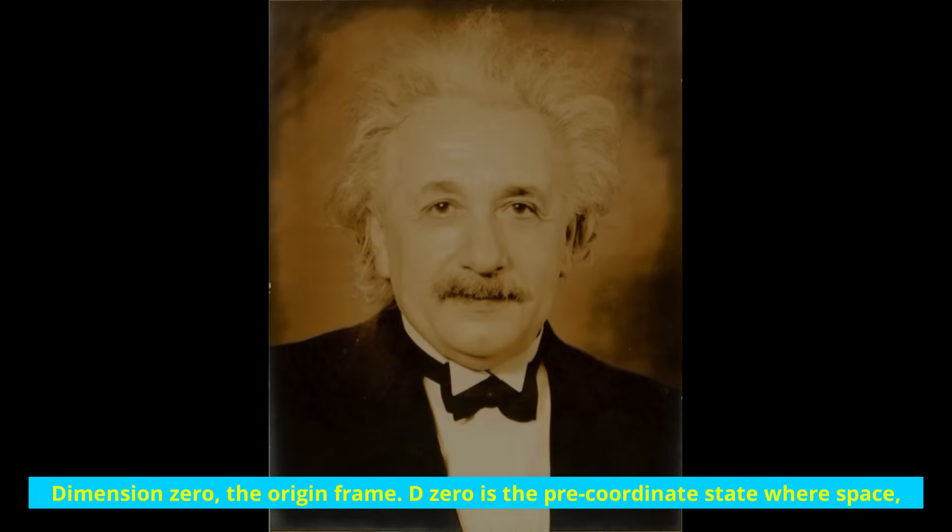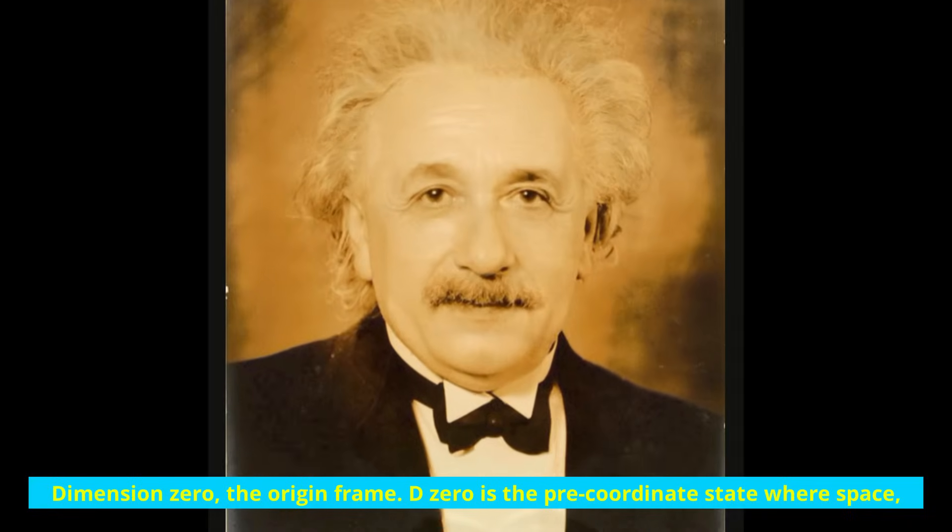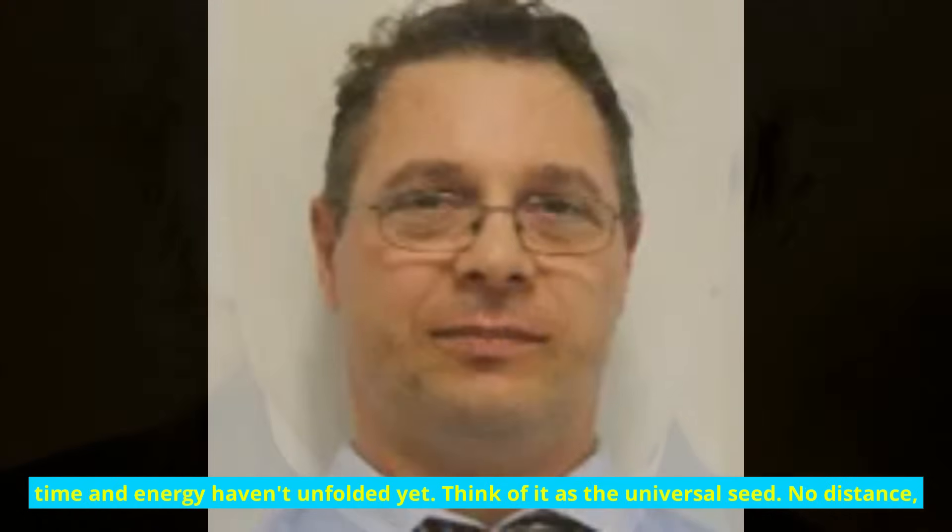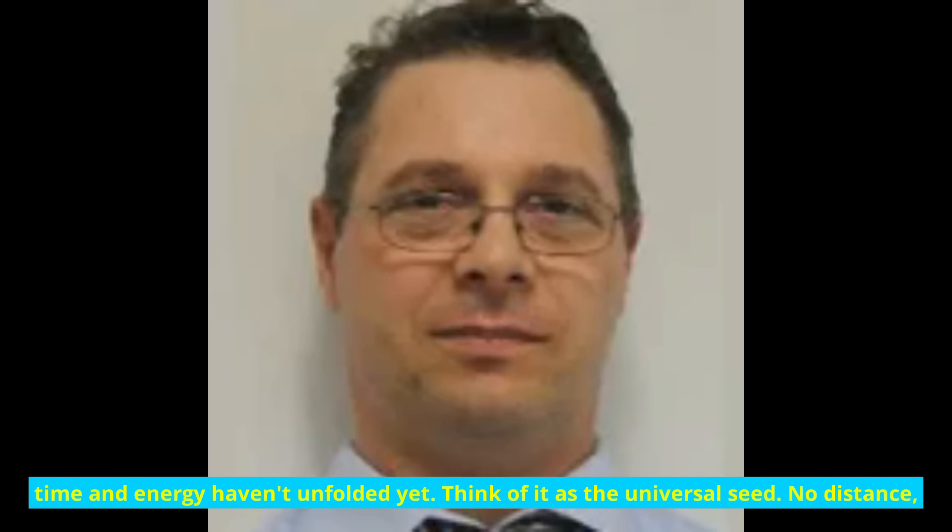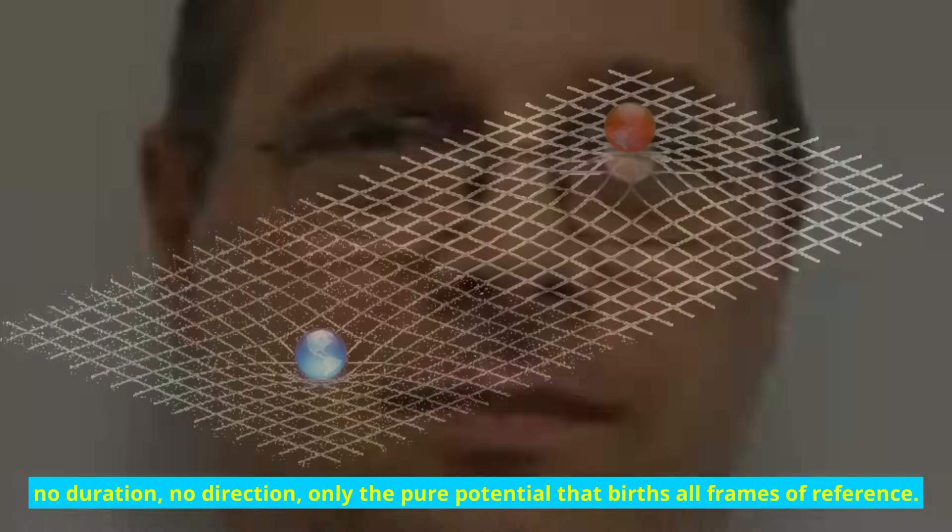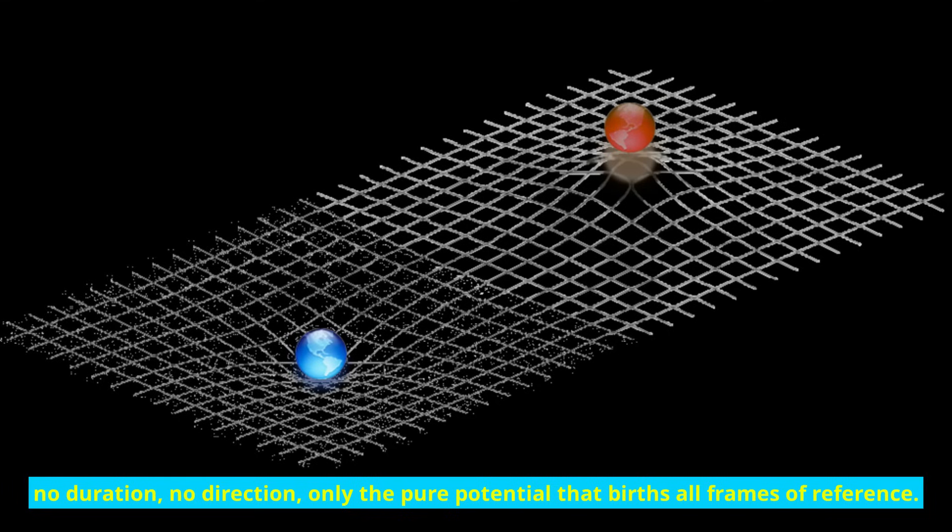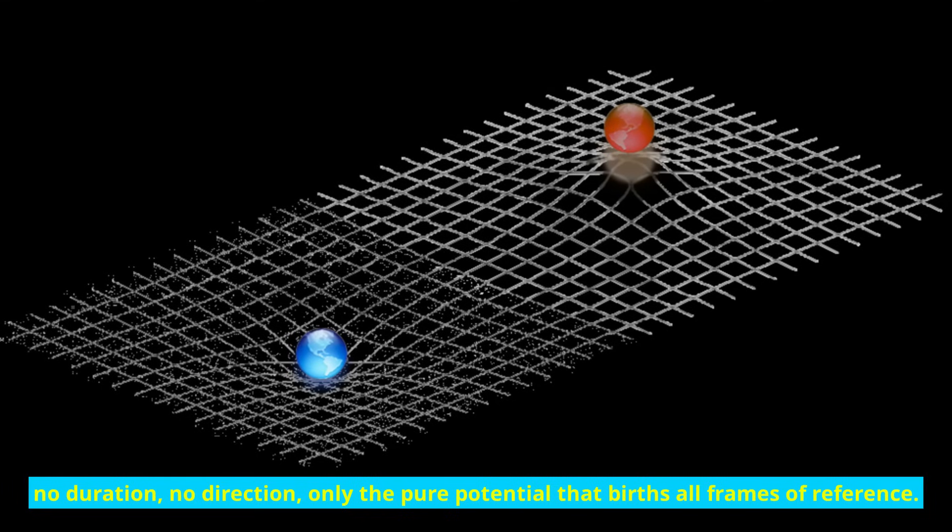Dimension zero, the origin frame. D zero is the pre-coordinate state where space, time, and energy haven't unfolded yet. Think of it as the universal seed. No distance, no duration, no direction, only the pure potential that births all frames of reference.